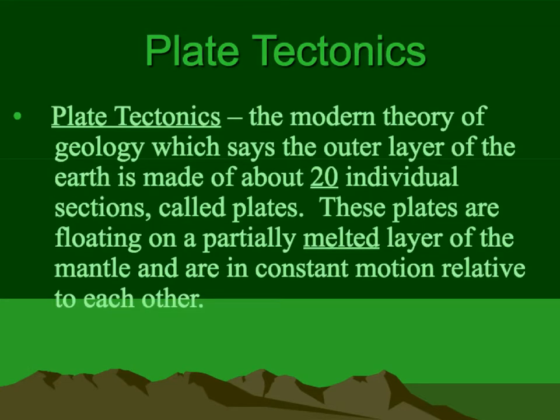If you want a definition — a long-winded definition of plate tectonics — it's the modern theory of geology which says that the outer layer of the Earth is made up of about 20 individual sections called plates. Each of those plates is floating on a partially melted layer of the mantle, and these plates are in constant motion relative to each other, smashing into one another, grinding past one another, and ripping apart from one another.